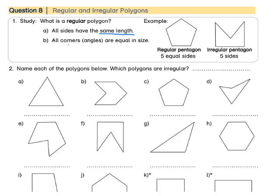All of the corners — another word for corners is angles, but you'll learn more about that in grade 5 — all of the corners are equal in size. For example, this is a regular pentagon. It has 5 sides and all of the sides are equal in length. Because all of the sides are equal in length, all of these corners are also the same size.